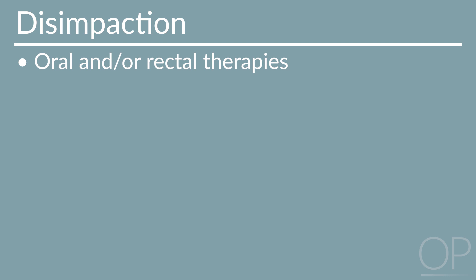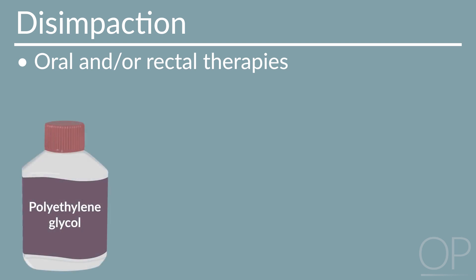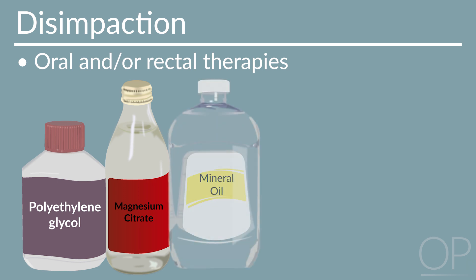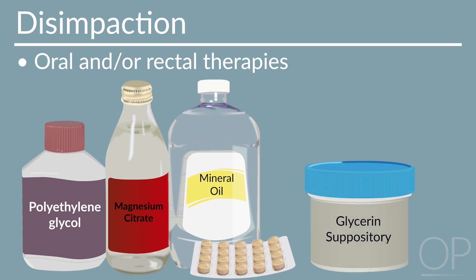Oral treatments include osmotic agents such as polyethylene glycol, magnesium citrate, lubricant mineral oil, and stimulants such as senna or bisacodyl. If unsuccessful, a rectal glycerin suppository can be used. Enemas with phosphate soda, saline, or mineral oil can also be used for more rapid treatment.